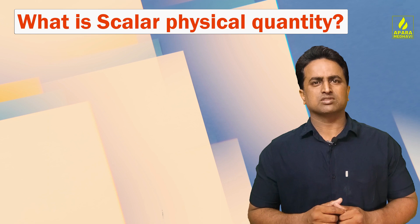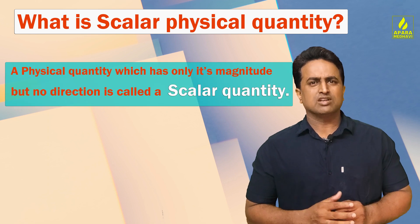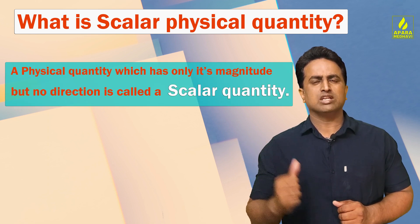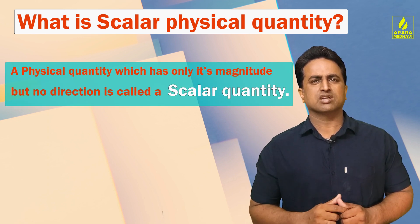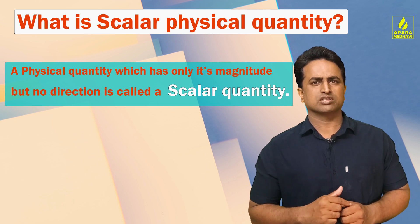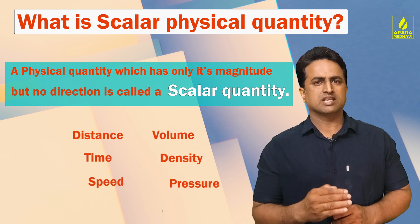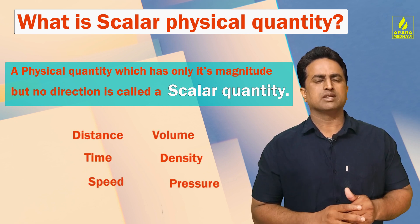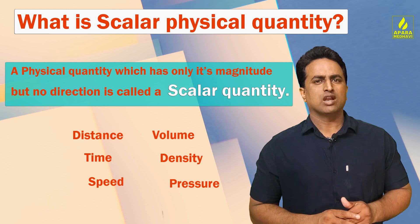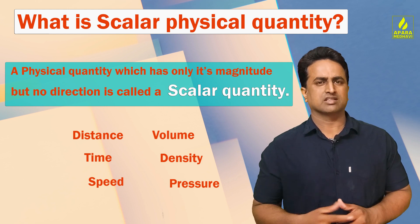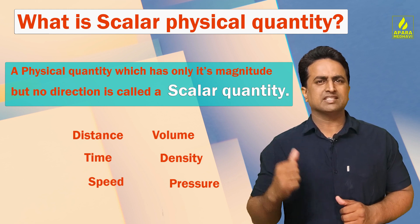A physical quantity which has only magnitude but no direction is called a scalar quantity. Examples of scalar quantities: distance, speed, time, density, volume, pressure, etc.